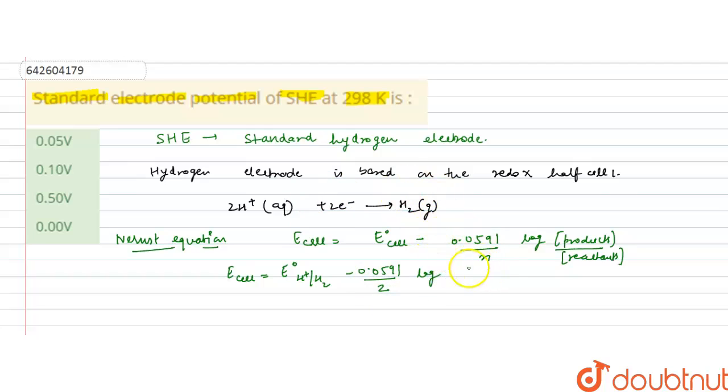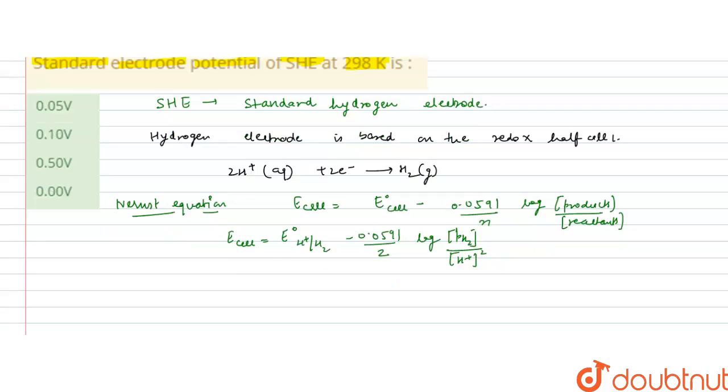Since H₂ is gaseous, we use partial pressure instead of concentration. H⁺ is raised to the power of its stoichiometric coefficient, which is 2. For standard conditions, E°(H⁺/H₂) = 0 V, the partial pressure of H₂ = 1 atm, and the concentration of H⁺ = 1 M.